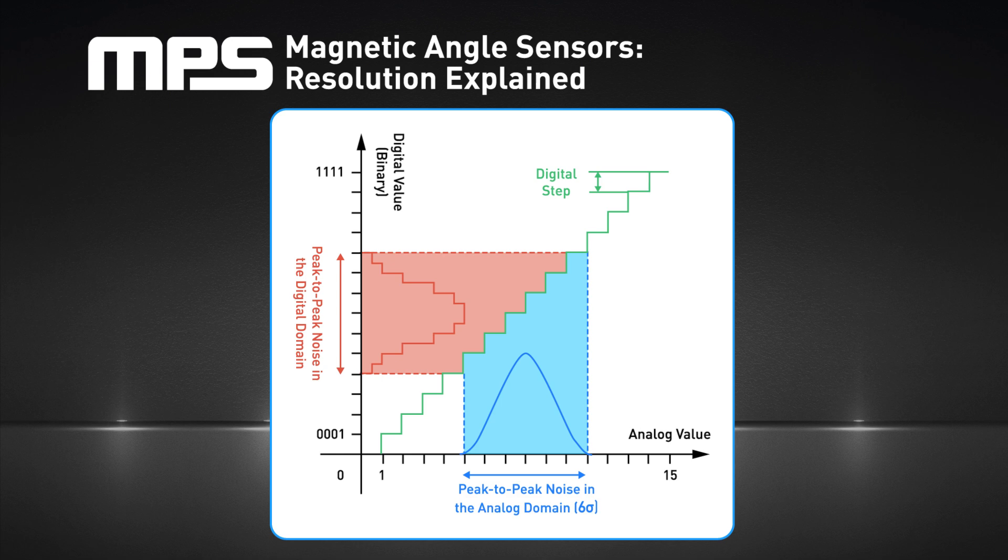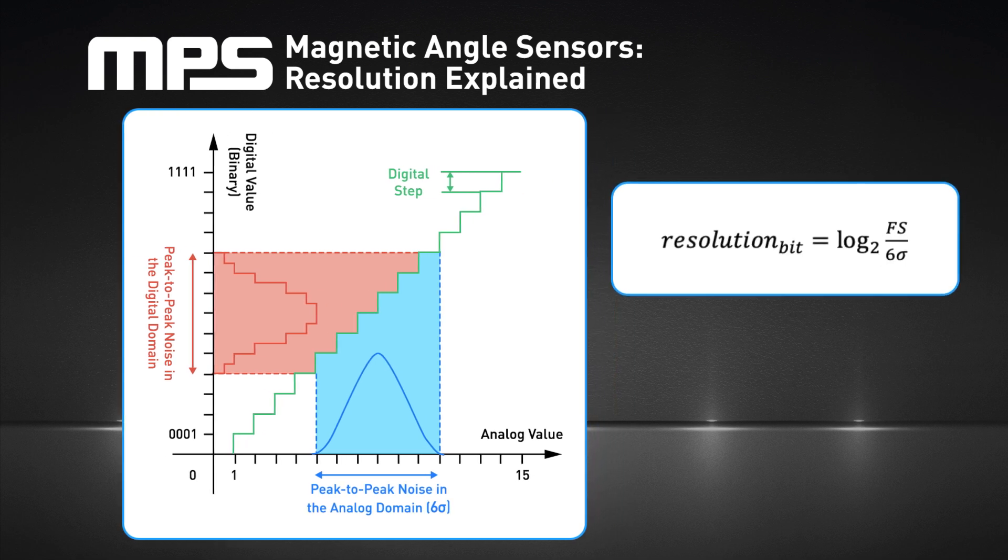In this example, the step size is 1, while the peak-to-peak noise is 6. In addition, the continuous and discrete distributions are shown on the x-axis and y-axis, respectively. Since the noise exceeds the digital step, decreasing the step size does not improve the resolution.